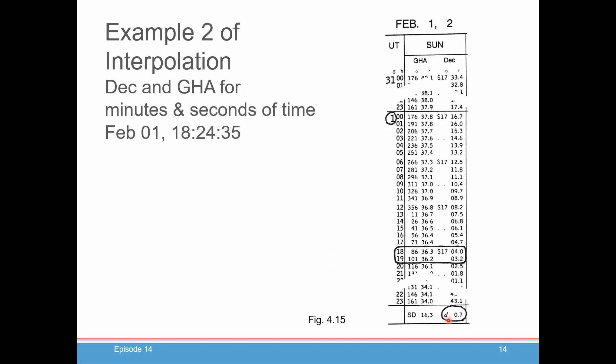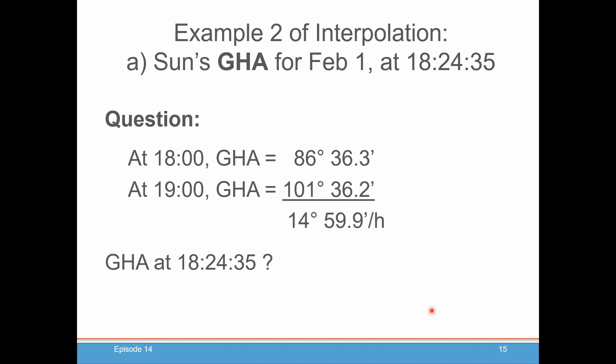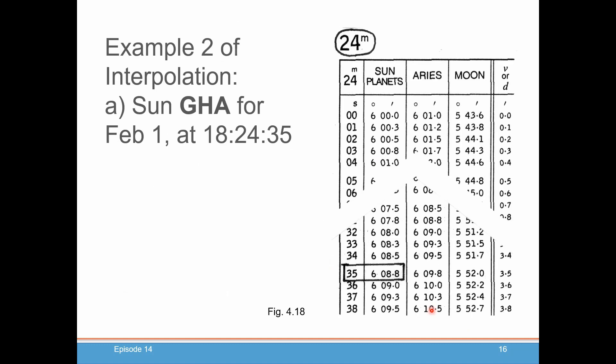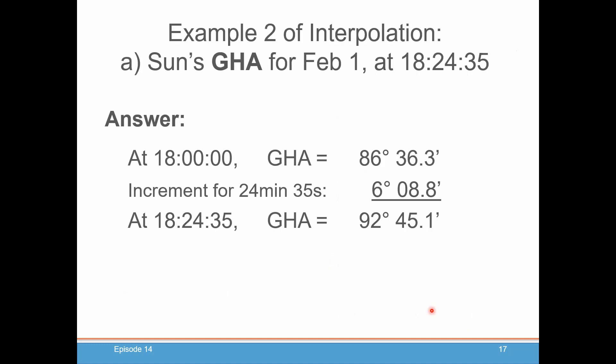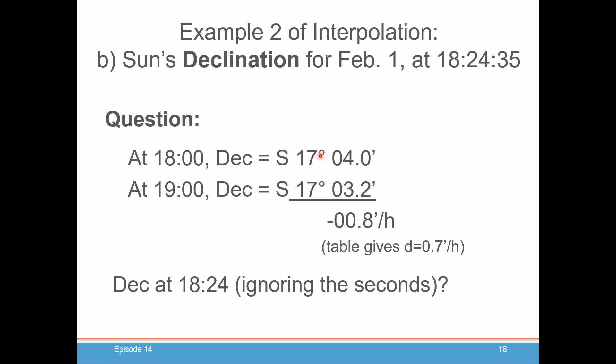You could use either the number that you calculate from doing the subtraction or just use the number that's at the bottom of the table. It's really not going to make very much bit of a difference. It's typically only going to be off by 0.1 minutes. And you're going to see when we do the interpolation, it makes very little difference. Rather than spend your time doing this, you can just take the D at the bottom of the table.